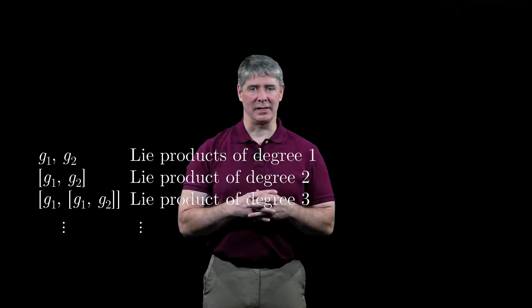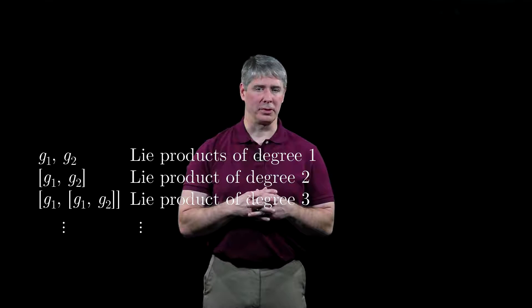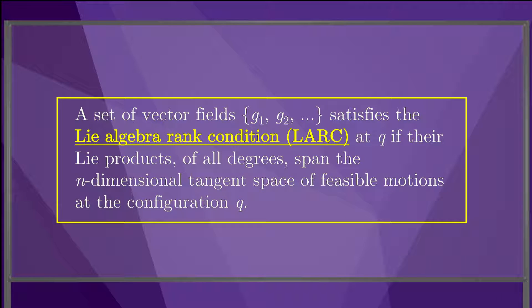The key idea behind testing for local controllability from a configuration Q is to see if the Lie products of all degrees, evaluated at the configuration Q, allow motion in every direction. We say that a set of vector fields satisfies the Lie algebra rank condition, or LARC, at a configuration Q if their Lie products of all degrees span the n-dimensional space of feasible motions at Q.